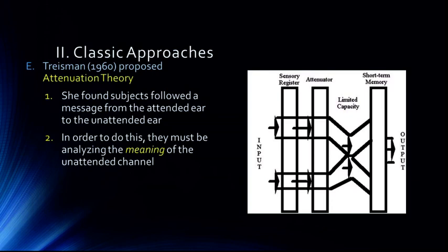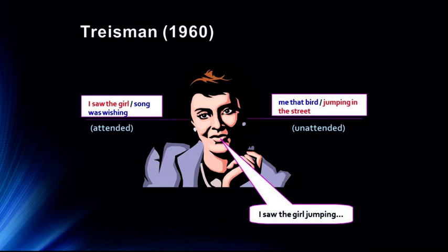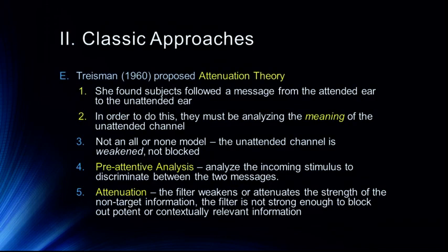In order to do this, they must be analyzing the meaning of the unattended channel. Here on the left is the attended channel, on the right is the unattended channel. The person shadowing the message says 'I saw the girl jumping in the street' because they follow the meaning of that message. This indicates that there's processing occurring early in that attentional process that is based on meaning.